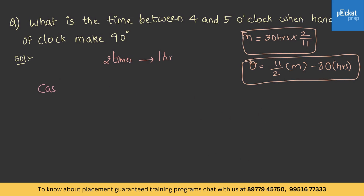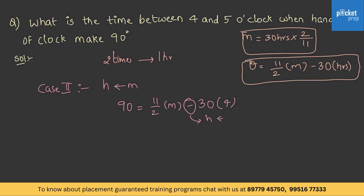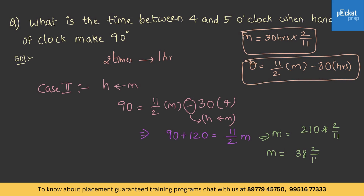In Case 2, the hour hand is behind the minute hand, so 90 = (11/2) × M − 30 × 4. Here it is taken as minus because the hour hand is behind the minute hand. That gives 90 + 120 = (11/2) × M, which gives M = 210 × 2/11, that is M = 38 2/11 minutes.